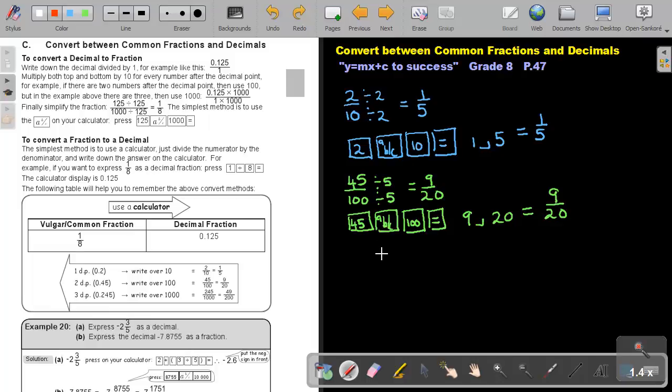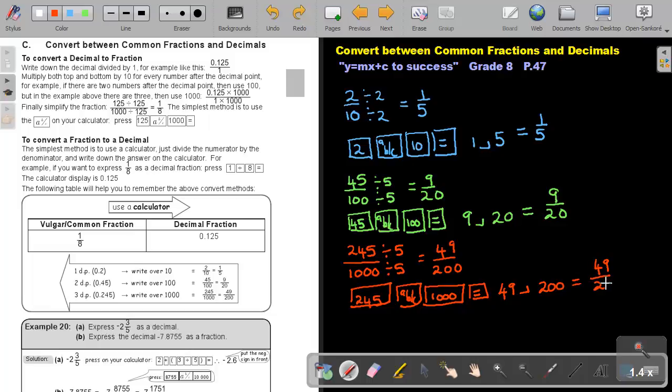And if I want to simplify this 245 over 1,000, again I can divide by 5 and I can divide by 5, and I will get 49 over 200. Or use my calculator: press 245, press the ABC key, press 1000, and press equal. And my calculator will display 49, which is actually just 49 over 200.